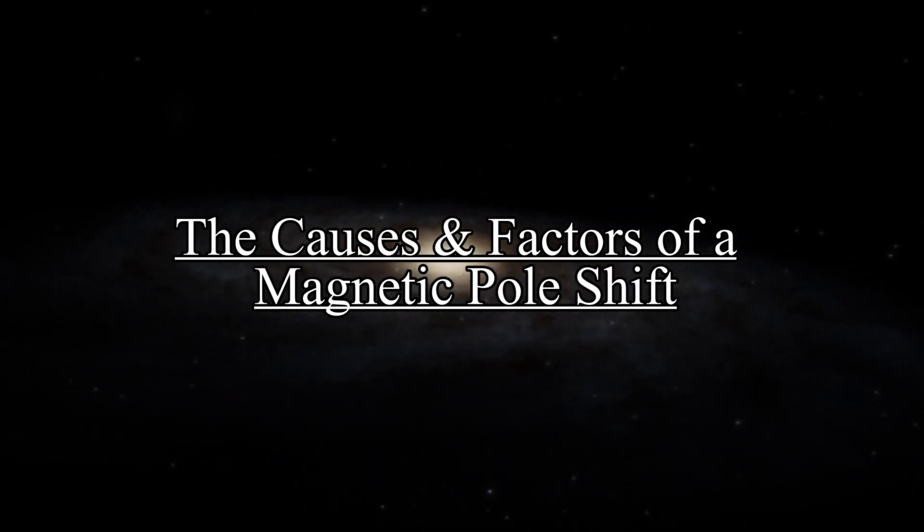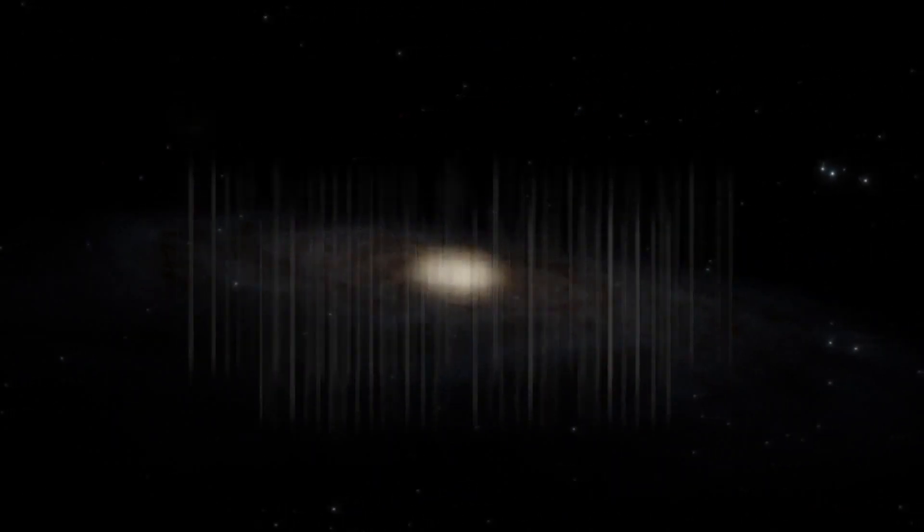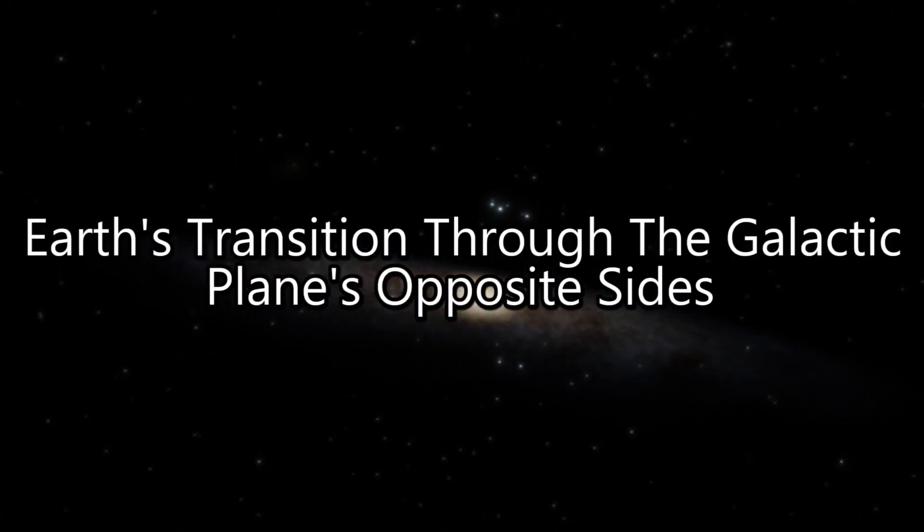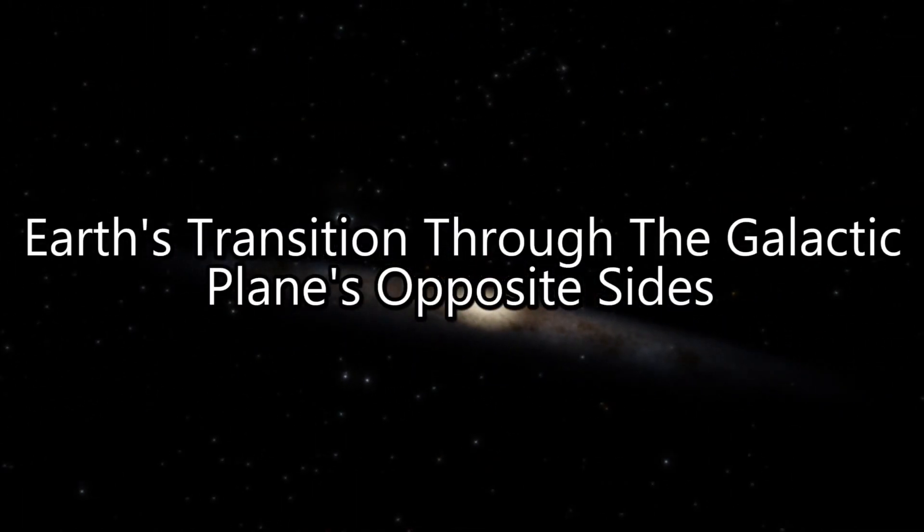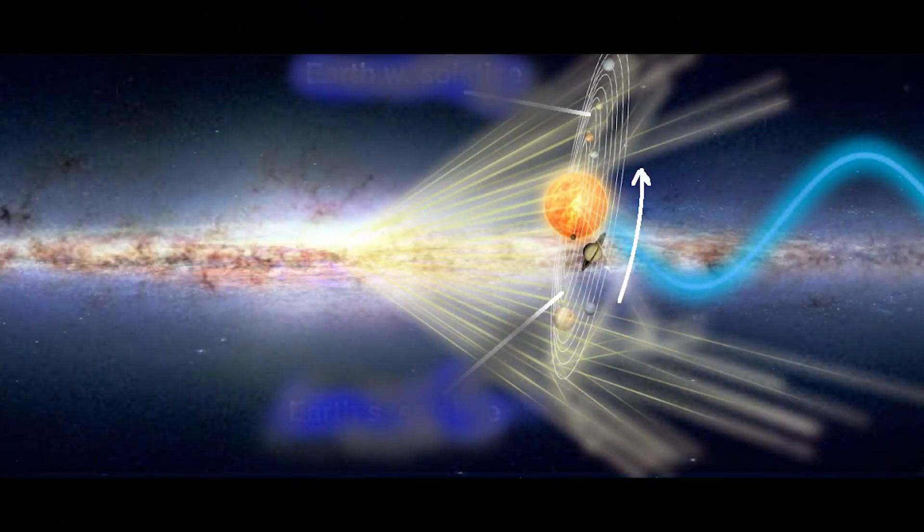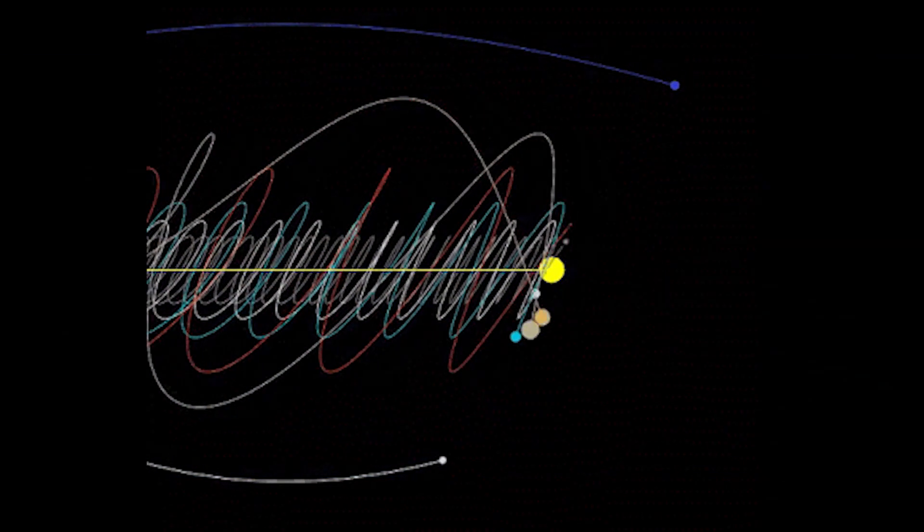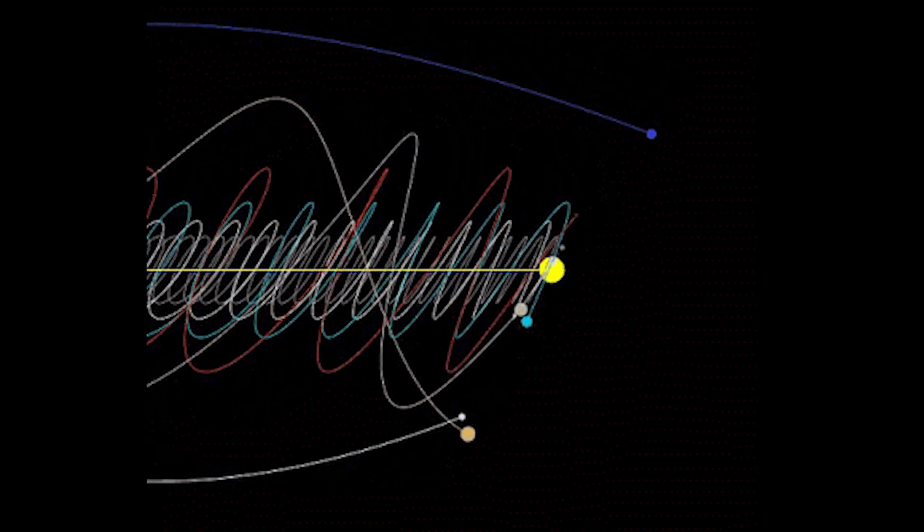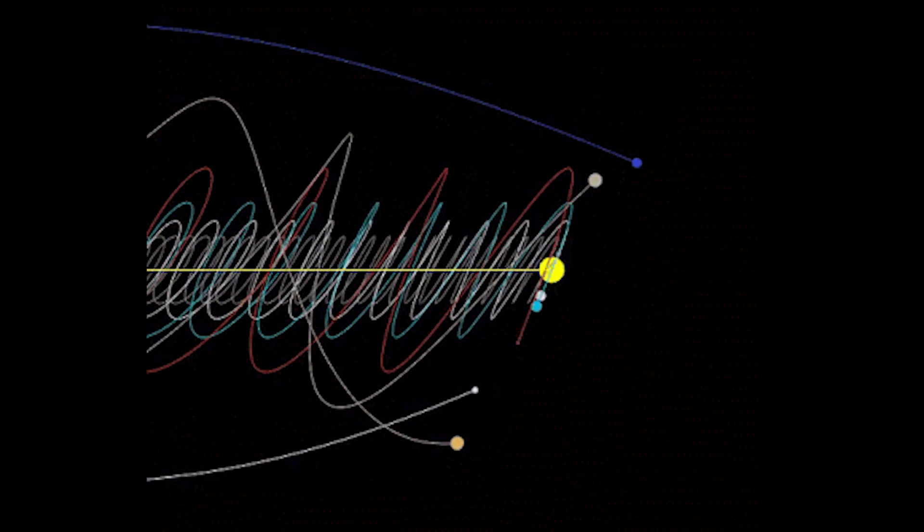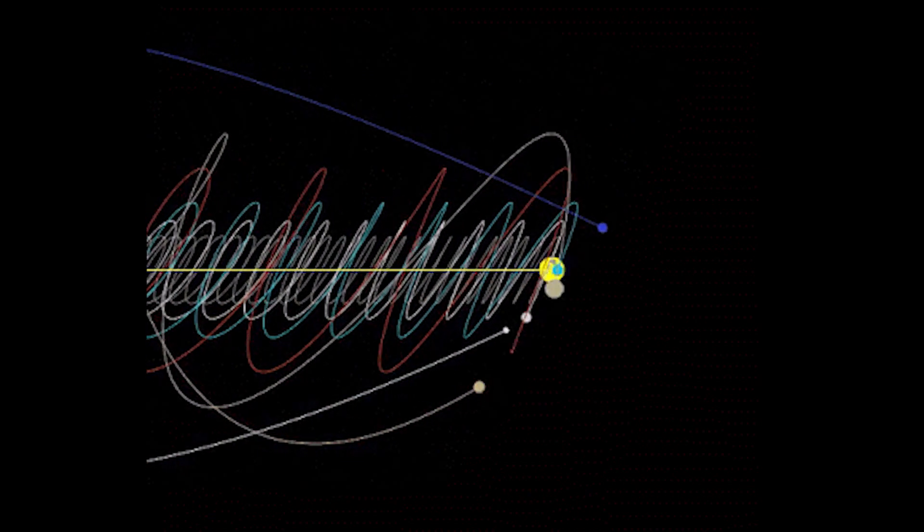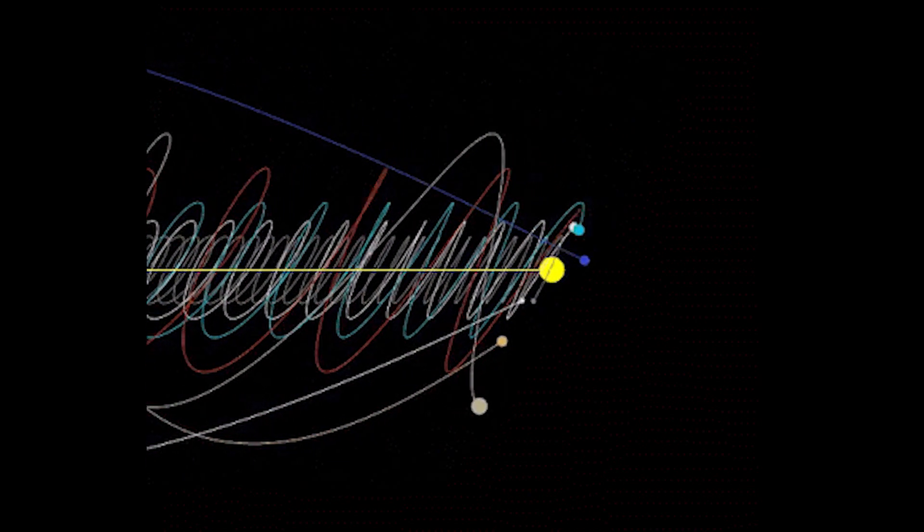Starting with what could possibly cause the pole shift. Cause number one could be Earth's transition through the galactic plane's opposite sides. The solar system moves through the Milky Way galaxy through cyclical motion from one side of the galactic plane to the opposite side. At which point the solar system would possibly go through a complete magnetic pole reversal or a partial magnetic pole disturbance with a small shift.